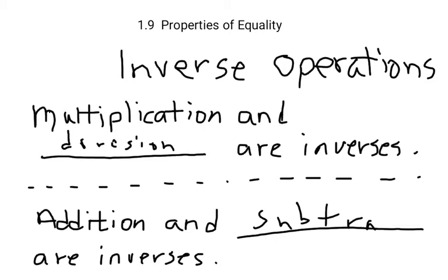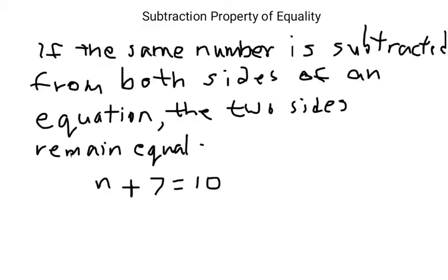Sorry, that's a really weird looking u. So we're going to go through the four properties of equality, and they're all very much like each other. So once you really get the subtraction property of equality, you will be able to just substitute the word addition, division, and multiplication in for the others. But they all basically say whatever you do to one side of an equation, you can do to the other side of the equation, and the two sides will remain equal.